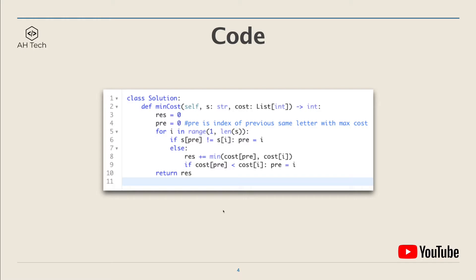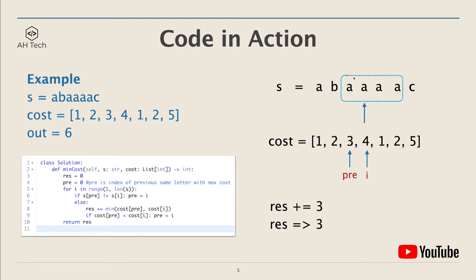Now let's see the code in action. For this example, we have a group of four repeating 'a's, and given this cost array, the final output will be six. For the first three letters nothing happens. When we get to the second 'a' in the group, the pre pointer points to the first 'a'. Here we delete the 'a' with the smaller cost, which is three, so we add three to res — res becomes three.